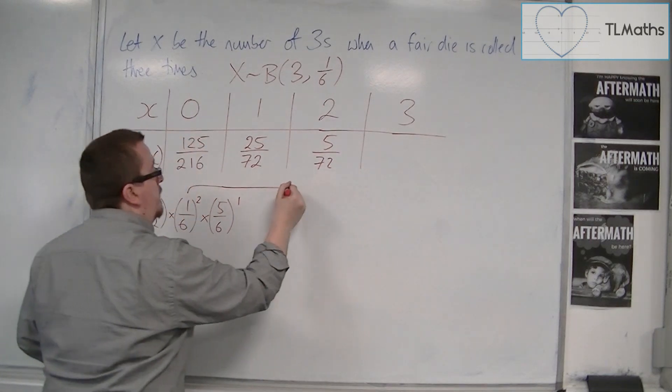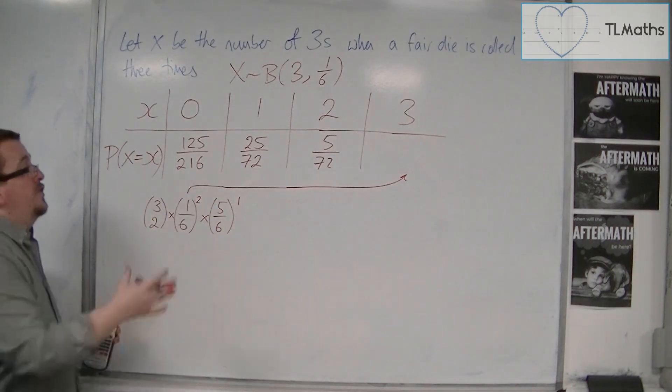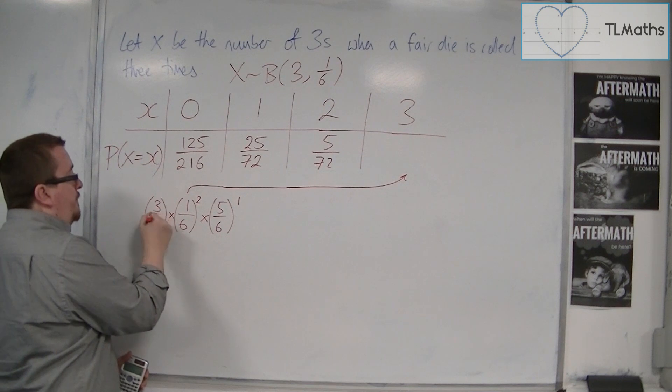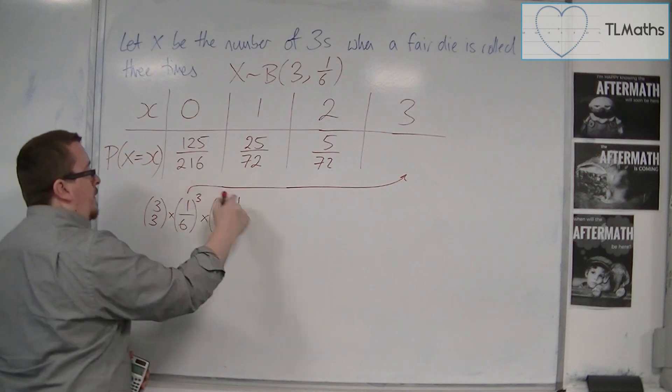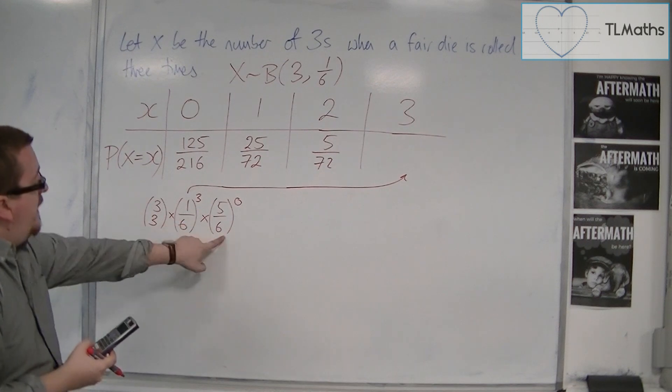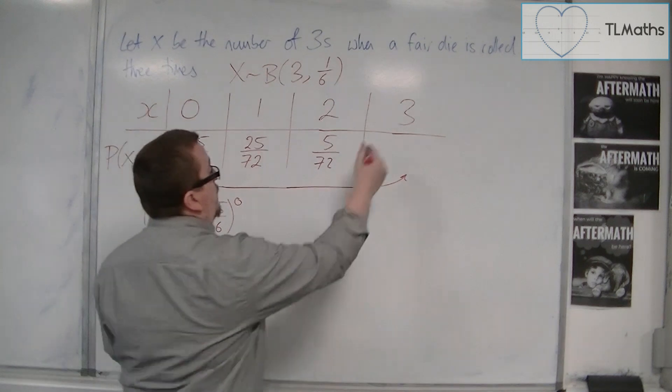And then finally, now I could use the formula here, or I could just do 1, take away those 3 fractions, so I'll keep with the formula. Just change it up. So 3 choose 3 is 1, that's 1, so it's just 1 sixth cubed, and that's 1 over 216.